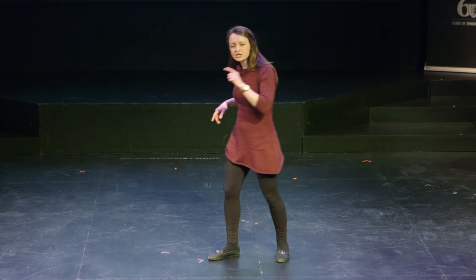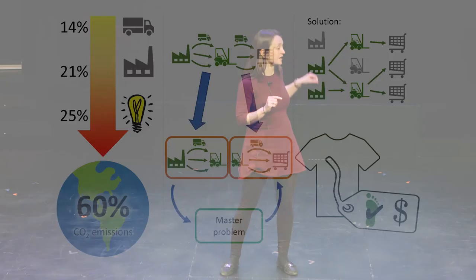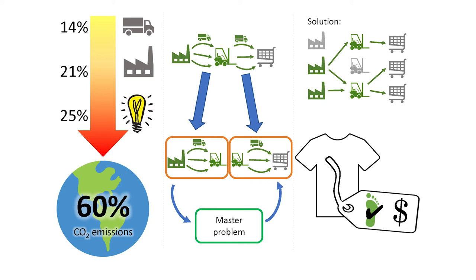Supply chain network design problems are NP-hard, which means they're extremely difficult to solve to optimality. So I'm using a method called Lagrangian relaxation — see the second panel. If I split my problem into two parts, I can make it much easier to solve. If I use a master problem to maintain a connection between the two sub-problems I solve separately, I can come to a good solution much quicker.